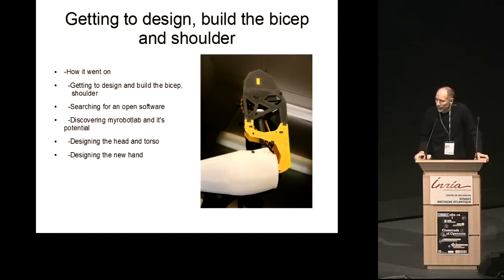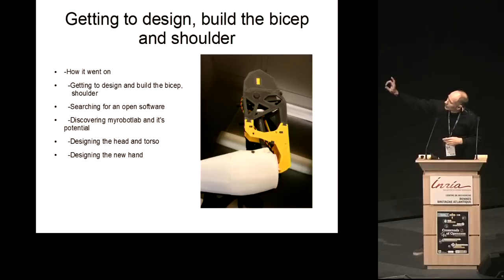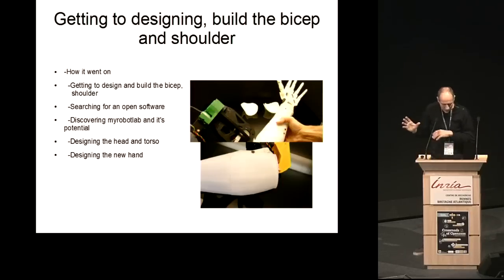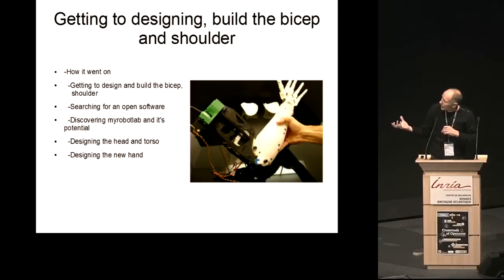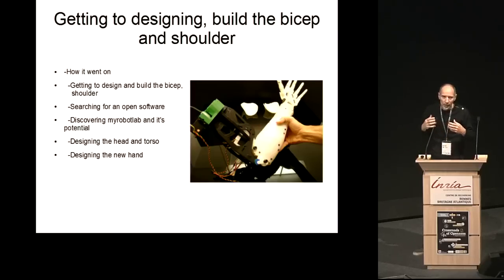Once I had a hand and forearm controlled by keyboard, I worked further — designing the whole bicep through several iterations. The servos I was using were small and cheap, around 12 euros, with a maximum torque of 23 kilograms. On multiple servos, they couldn't carry enough load, so I had to think of another way to actuate the arm using those small servos differently.